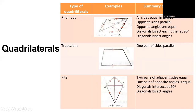A rhombus has all sides equal in length, opposite sides parallel, opposite angles equal (A = C and B = D), diagonals that bisect each other at 90 degrees, and diagonals that bisect the angles. A trapezium has only one pair of parallel sides.